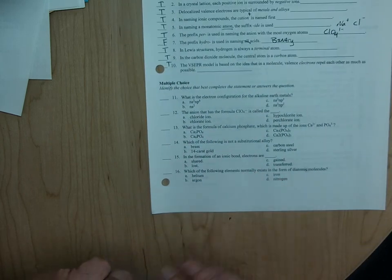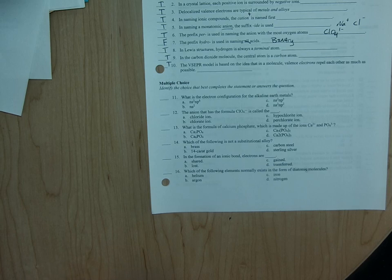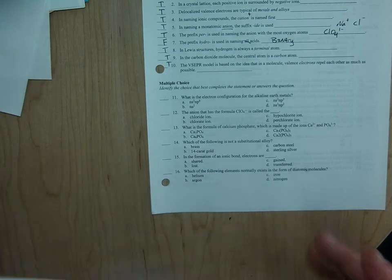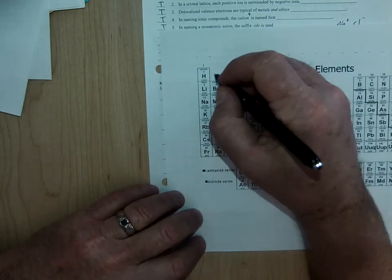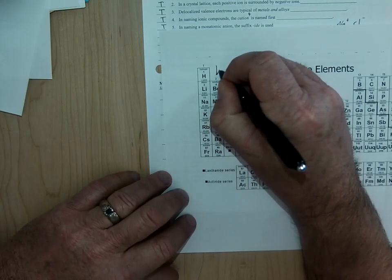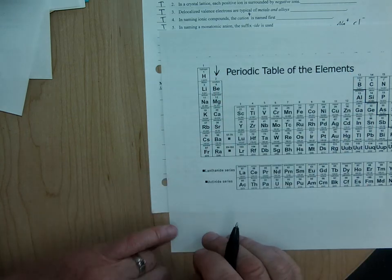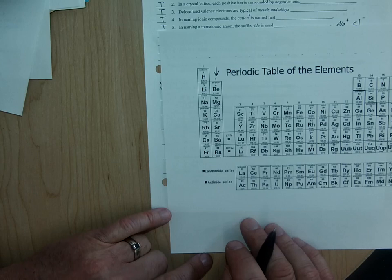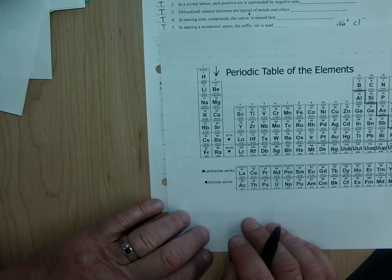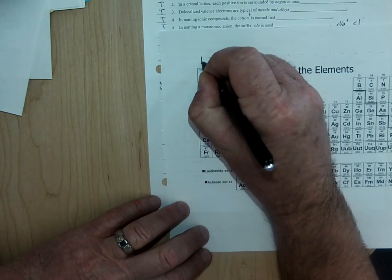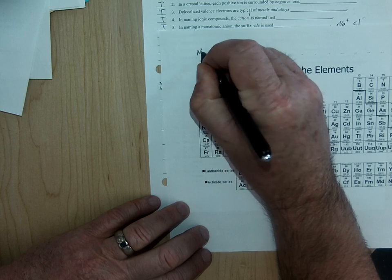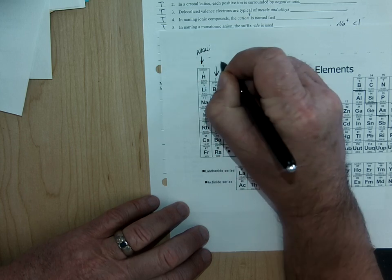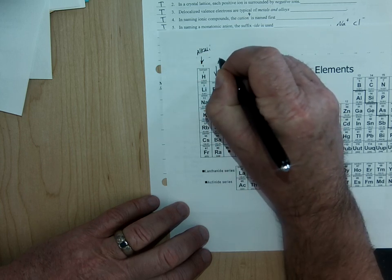So then it goes into reviewing some stuff that we've already kind of tested on a little bit. The electron configuration for the alkaline earth metals. So if you've got your periodic table, you should know by now, hopefully, that group two is the alkaline earth metals. Group one is the alkaline metals. So this one, group one, is alkaline. And this one, group two, is alkaline.